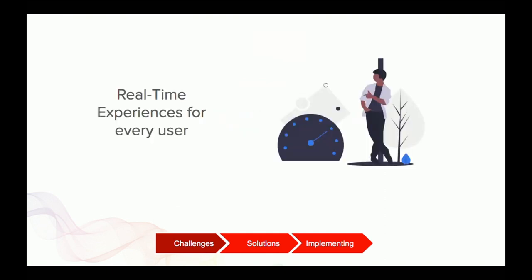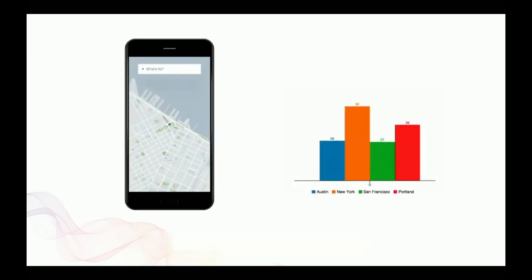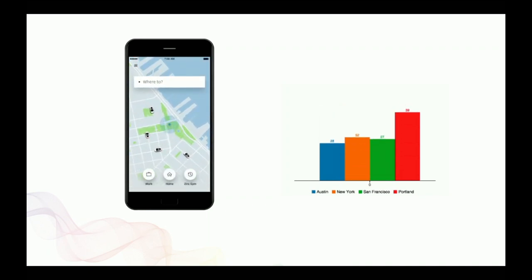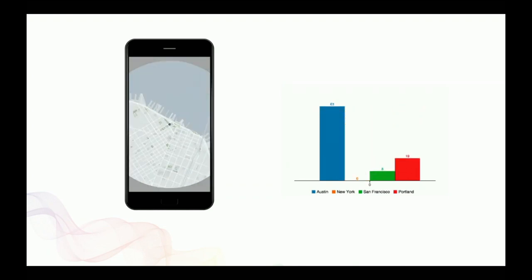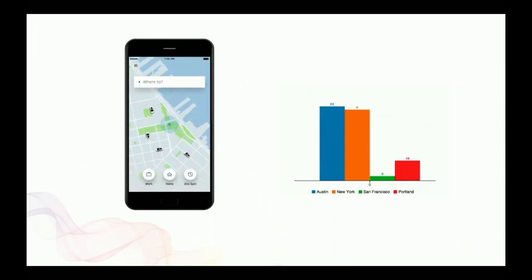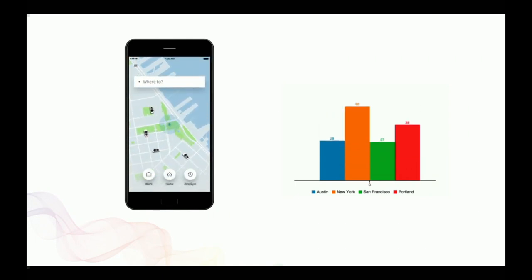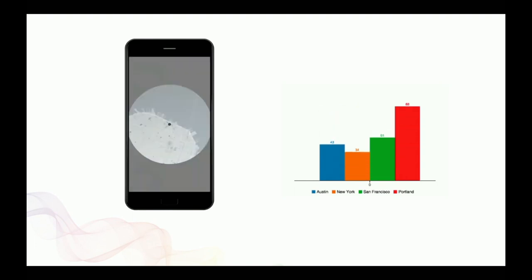We then ran into another problem: making real-time experiences for every user. If you open the Uber app, you want to see cars in real time. This became a trend with mobile users — seeing real-time analytics from servers and acting on it immediately. Around 2008 to 2012, only big companies had real-time. But consumer apps like Uber showed it's possible. The old paradigm of making HTTP requests to an API endpoint — getting a JSON back and putting it in your front end — just doesn't cut it for real-time streaming. It doesn't scale.